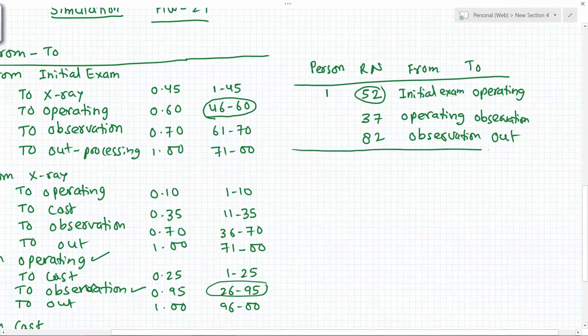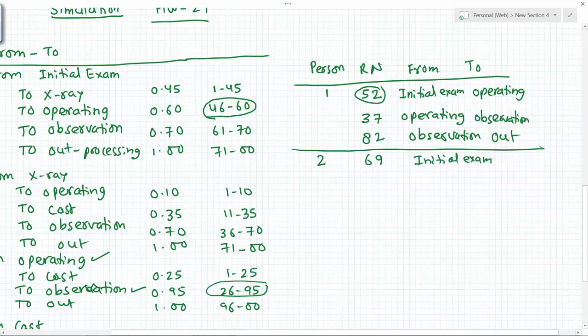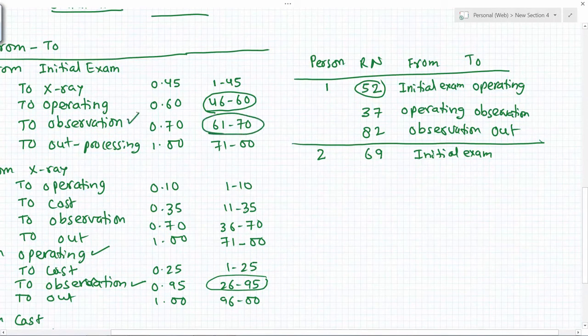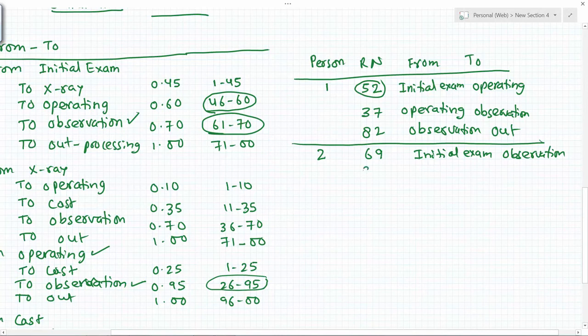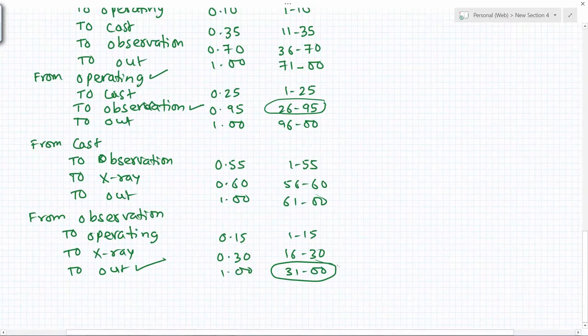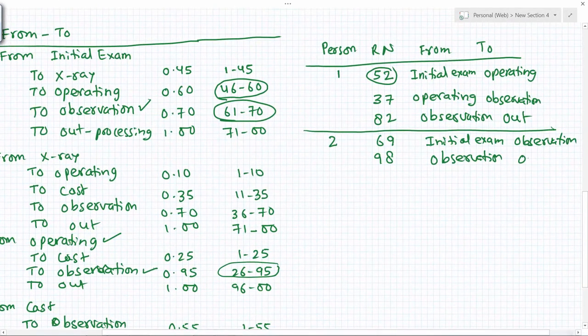That will complete simulation for the first patient. Then we go to the next patient, and the random number is 69. This patient again starts with initial exam, and 69 is somewhere here, so the patient will go to observation. The next random number is 98, so from observation, 98 is here, so the patient is out. This patient is lucky, so two trips and out.